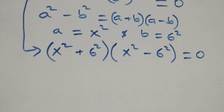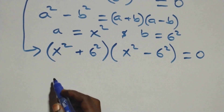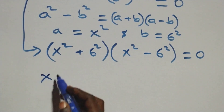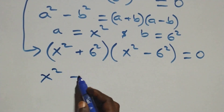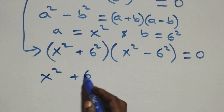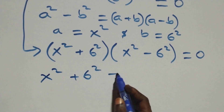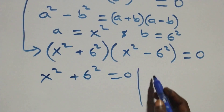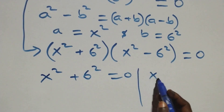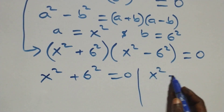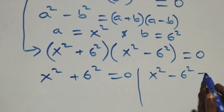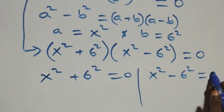At this point we have two possible cases. The first one: x squared plus 6 squared equals 0, or the second one: x squared minus 6 squared equals 0.